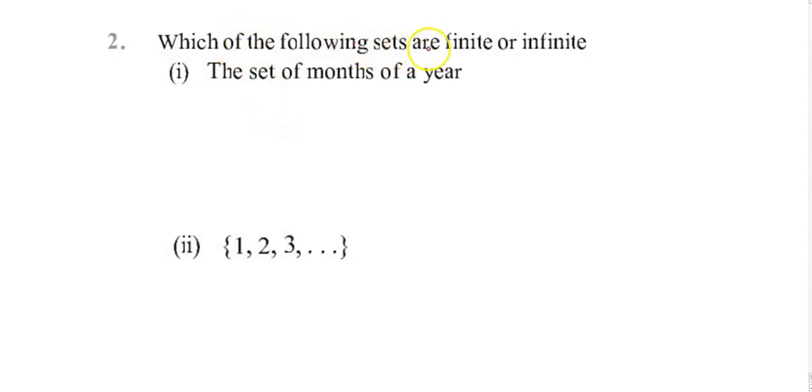Which of the following sets are finite or infinite? The set of months of a year: Jan, Feb, March, April, May, June, July, August, September, October, November, and December. This list ends, so this collection is a finite set.